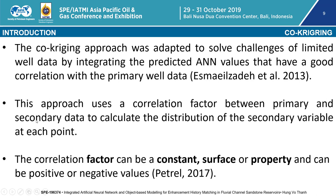The next method I consider is co-kriging. Co-kriging is important because it can address the challenge of limited well data by combining predicted annual values that have good correlation with the primary well data. This approach uses the correlation factor between the primary and secondary data to calculate the distribution of the secondary variable at a given point. From the geological software, the correlation factor can be considered as a phase or property and can take positive or negative values. Due to this advantage, co-kriging will be incorporated into this research.